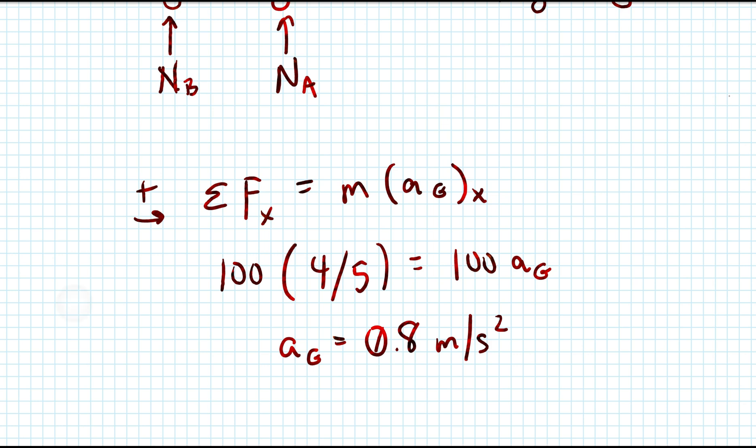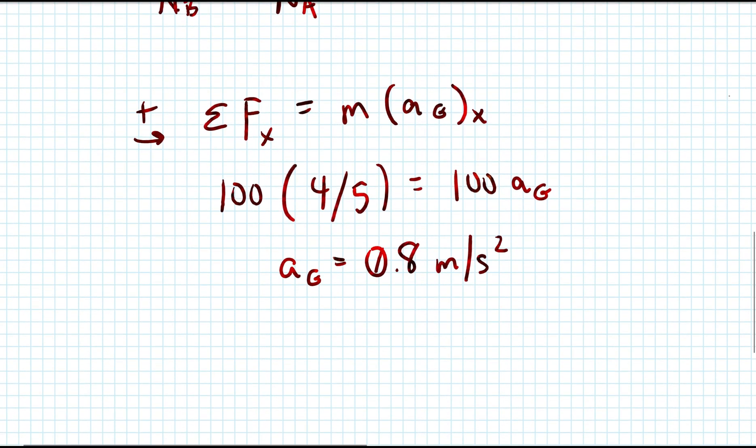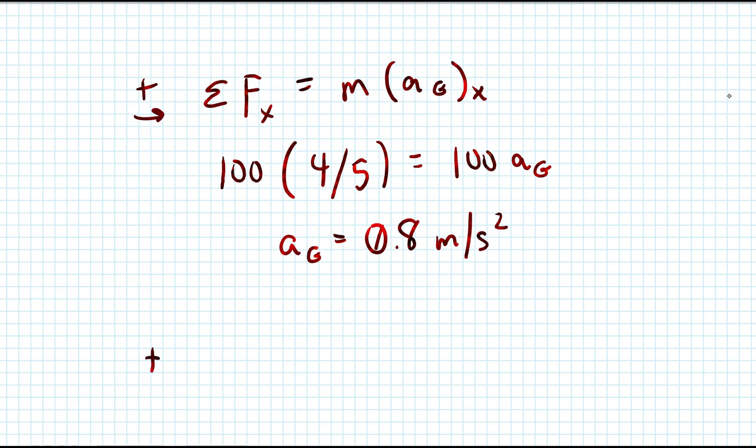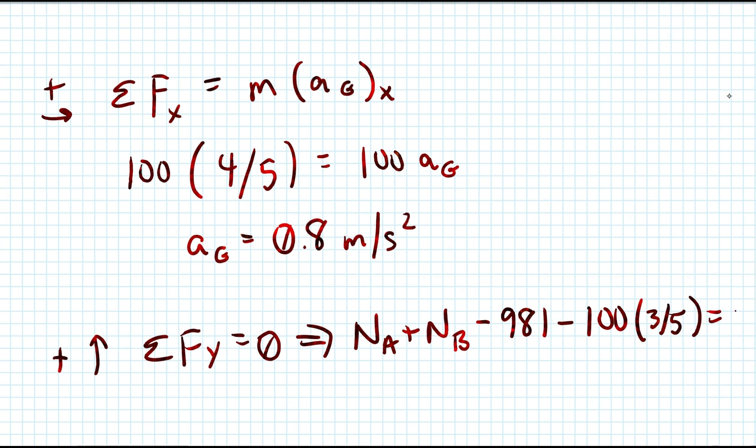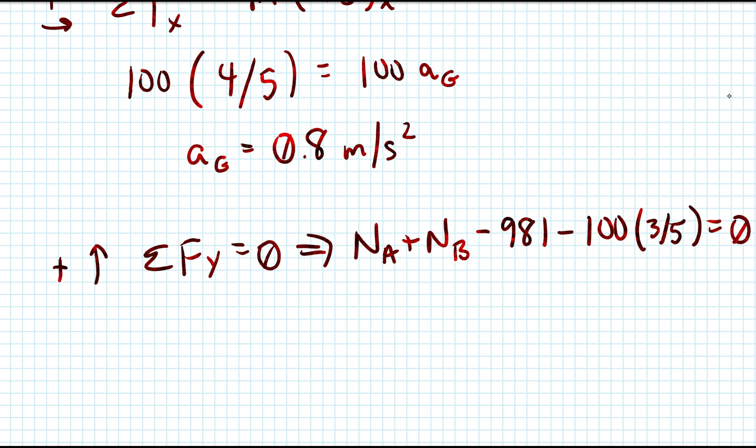After this, we go ahead and apply the equation of motion in the Y direction and then sum the moments about G. So sum of F sub Y equals 0, which yields N sub A plus N sub B minus 981 minus 100 times 3 over 5 by using that triangle, and that's equal to zero. Going further with this, N A plus N B is equal to 1041 newtons.